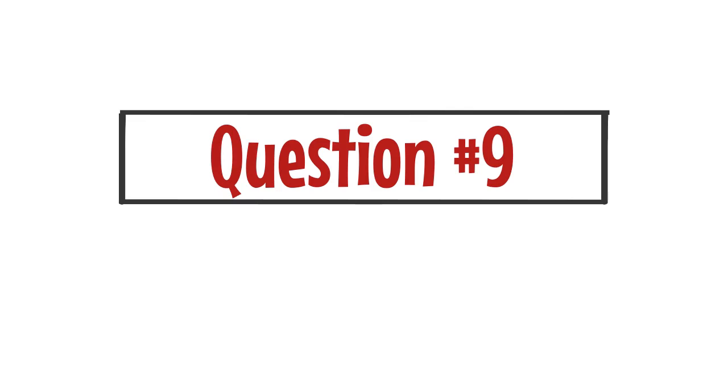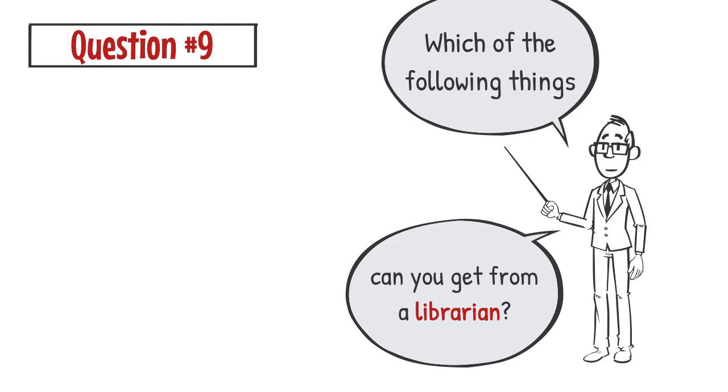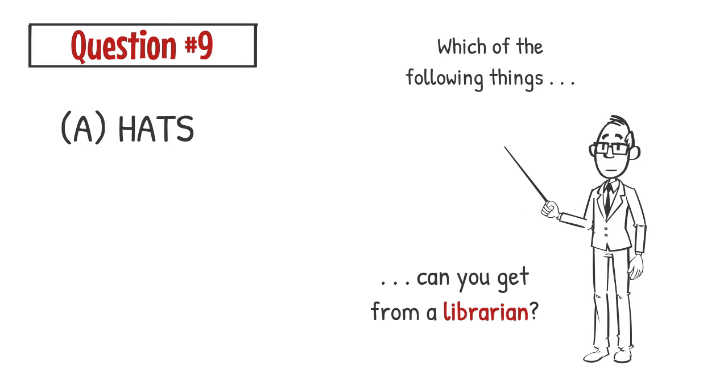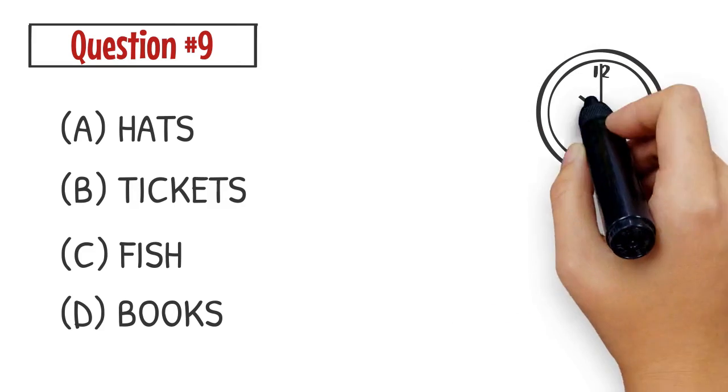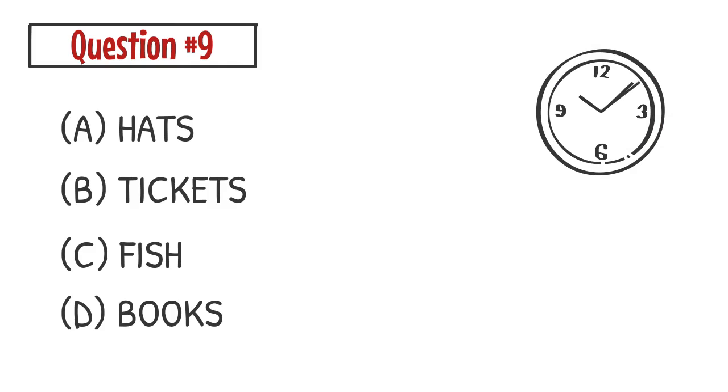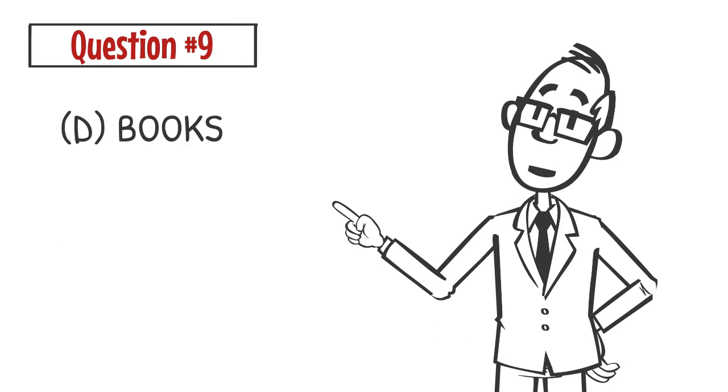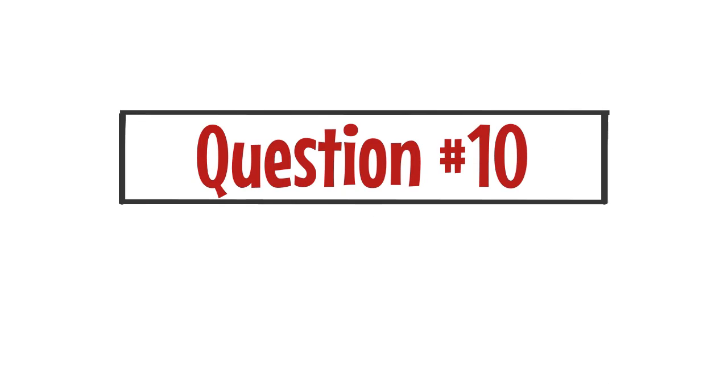Question number 9: Which of the following things can you get from a librarian? A. Hats. The correct answer is D. You can get books from a librarian.